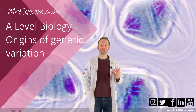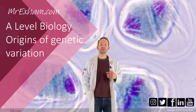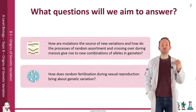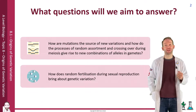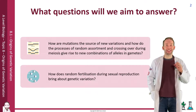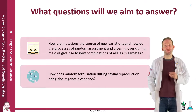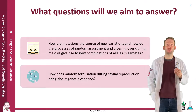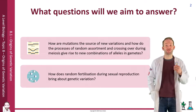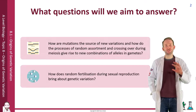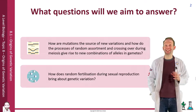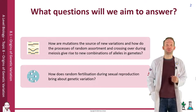In this lesson we're going to learn about the origins of genetic variation. We'll look at how mutations are the source of new variations, how the process of random assortment and crossing over during meiosis give rise to new combinations of alleles in gametes, and also the process of random fertilization during sexual reproduction to bring about genetic variation.